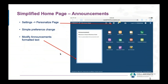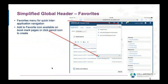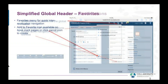Back to the simplified home page — this is the announcement section. That can be customized; you can put daily announcements in there if that's important to you. This is a simple preference change to have this look and feel. Here, the star represents the favorite icon. As you may do today, you can add favorites throughout the application suite by clicking the pencil in the lower left corner.